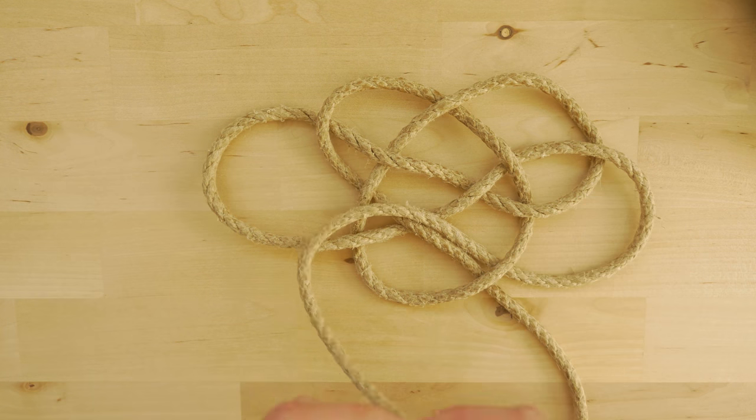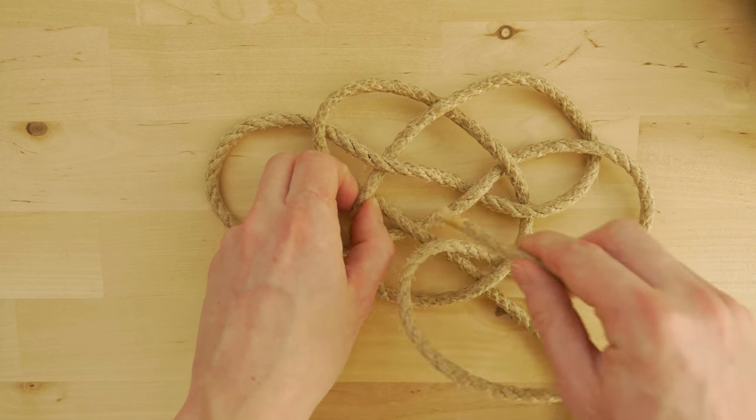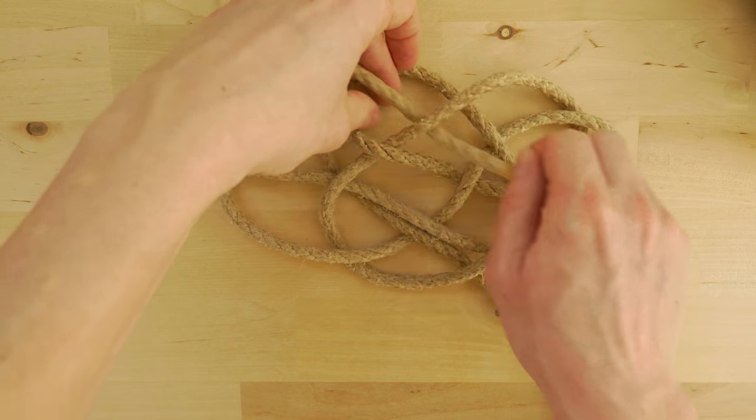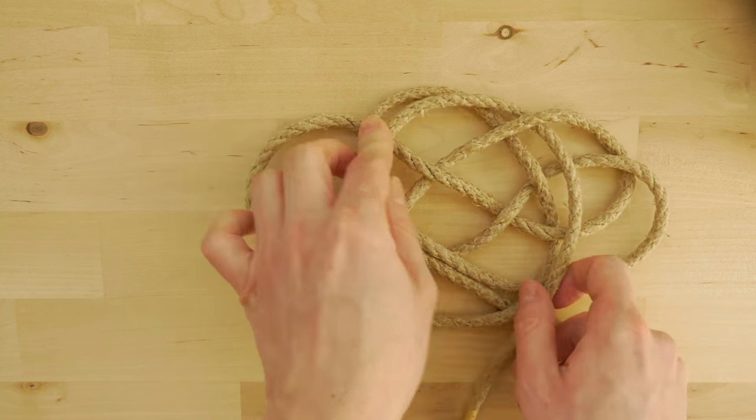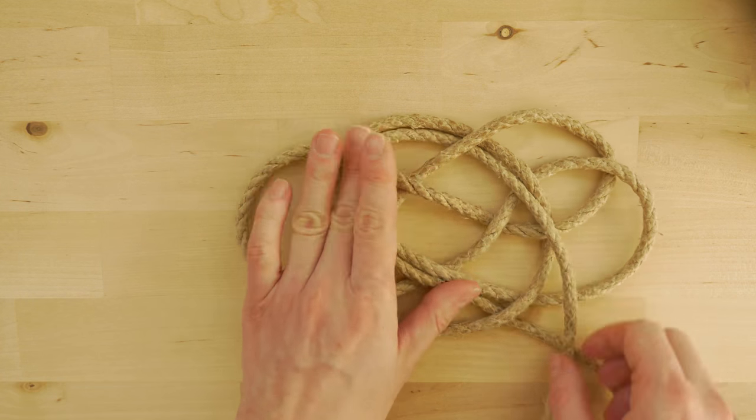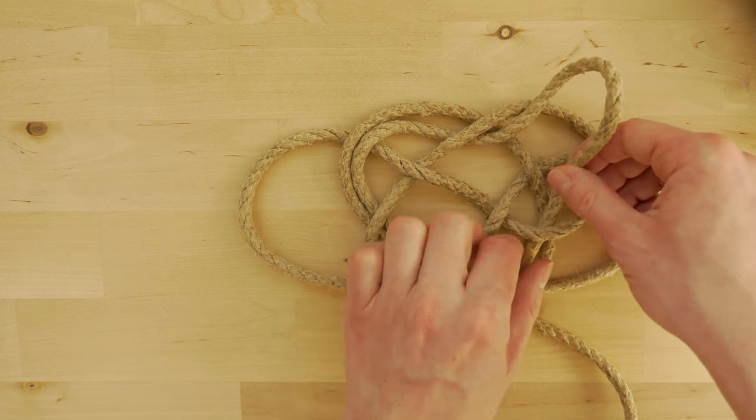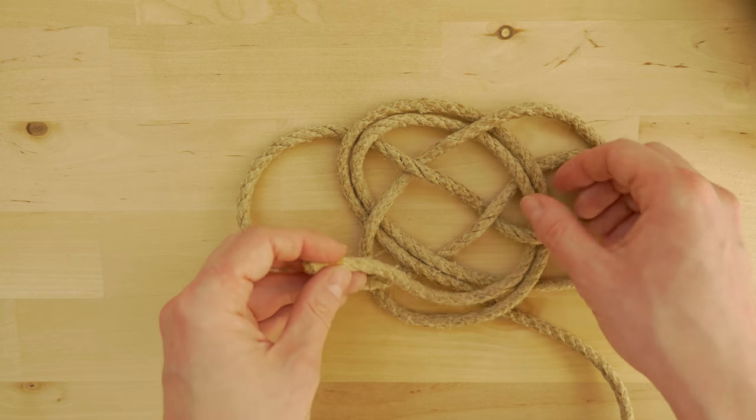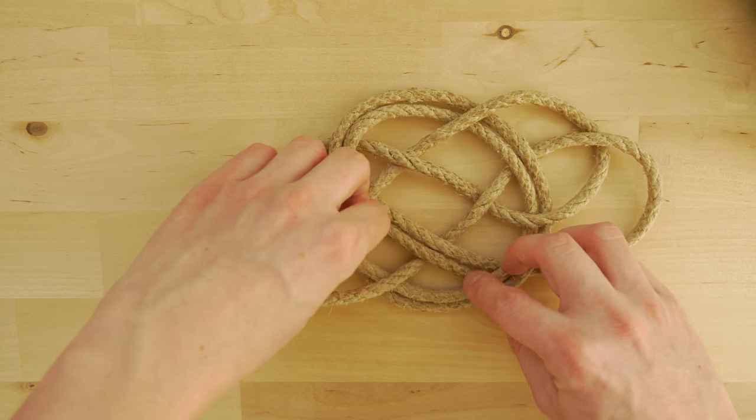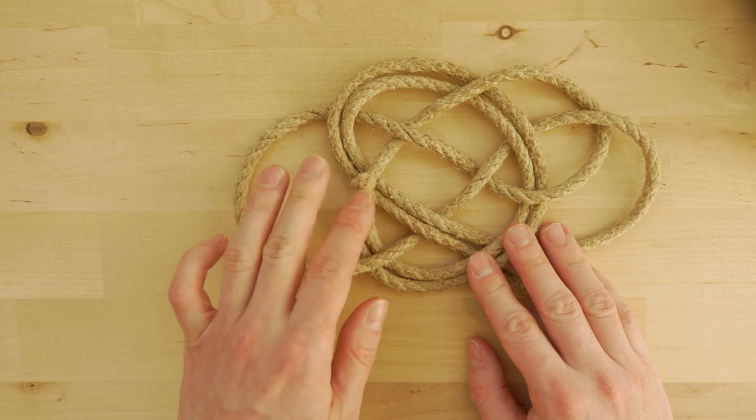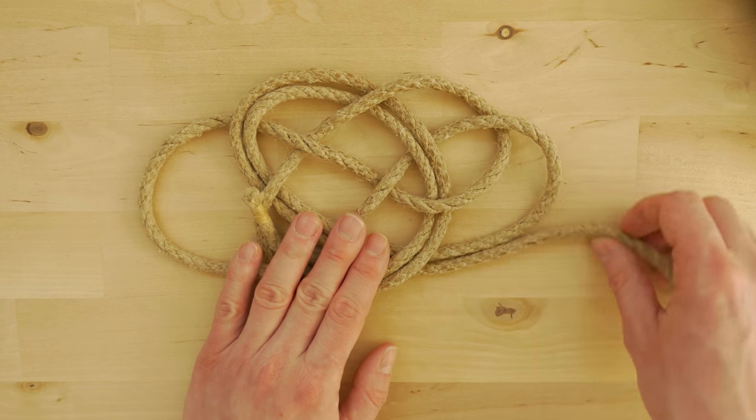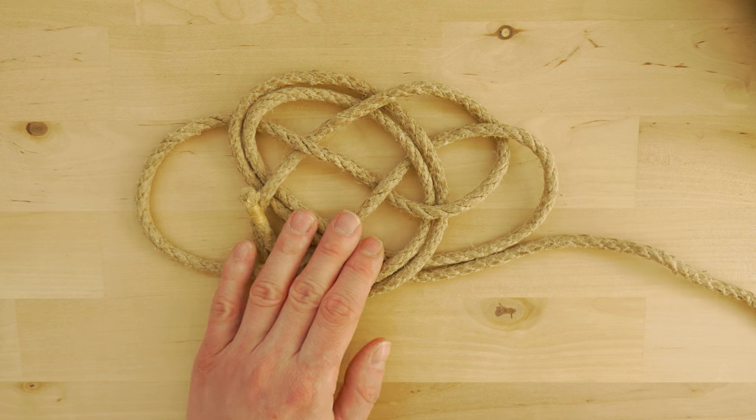After you have done that, use one of your ends to follow the other end and this starts to double up your knot. Once you run out of rope in one of your ends, simply switch to your other end and start doubling up or tripling from that side.